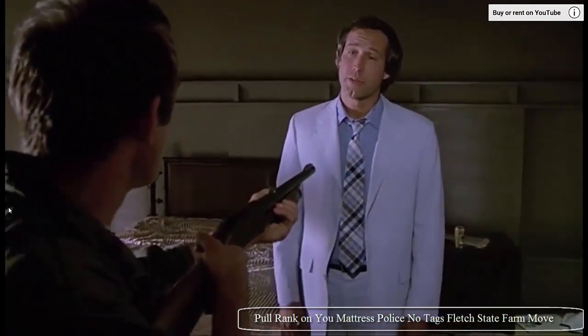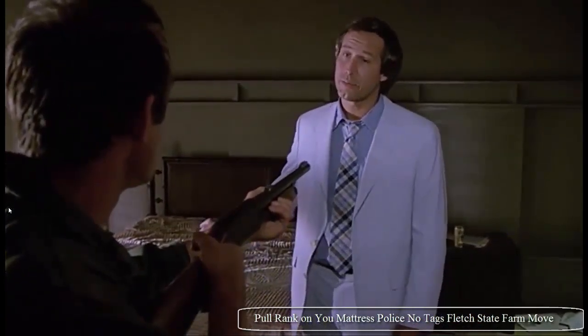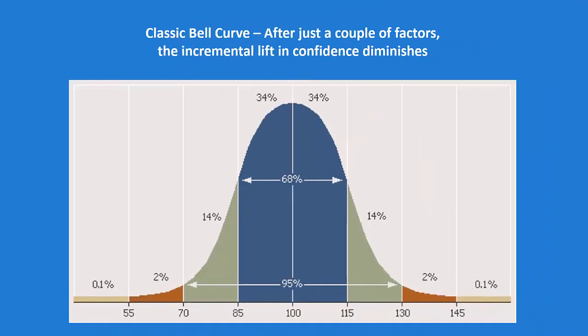But here's something that statistics will bear out. And this applies to predictive models as well. The classic bell curve says that after a couple of factors, the incremental lift in confidence diminishes. What does that mean? So let's take each one of these pillars and let's say there's factors. And so in this model here, I've got eight factors. And my two best predictors are right there dead center. They will predict, on average, 68% of the time, the right reserve or the right charge off ratio. If I go out and add two more factors, I'm going to add 28% lift to my predictive model. If I add two more factors, I'm only going to add a 4% lift. And add two more factors, I'm going to add 0.2%.